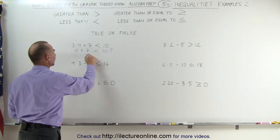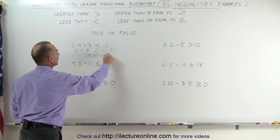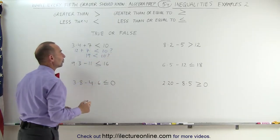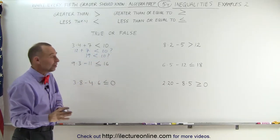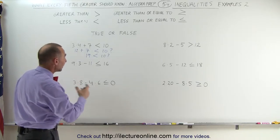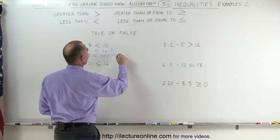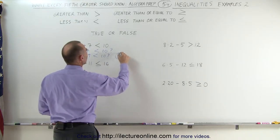12 plus 7 is 19. Is that less than 10? The answer is no, it's not. 19 is larger or greater than 10. Therefore, this is a false statement.